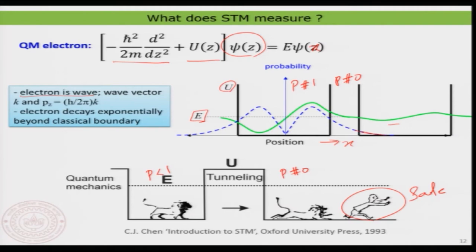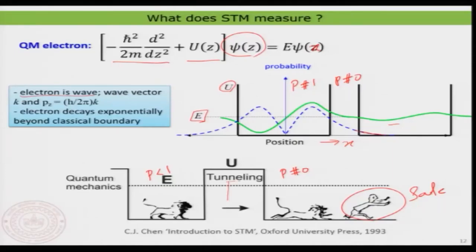You cannot just have the electron placed at a given position; you will have a probability to find it elsewhere. Therefore, the electron can in fact penetrate the classically forbidden barrier. This is basically the classically forbidden barrier, but the electron can tunnel through the barrier and come out the other side — that is the interesting aspect.